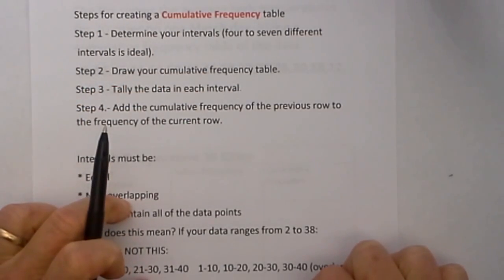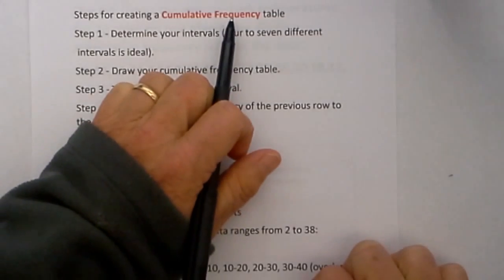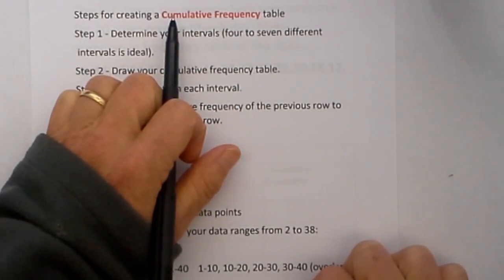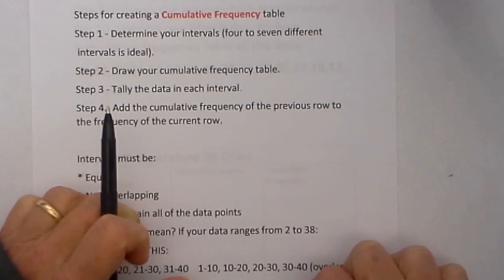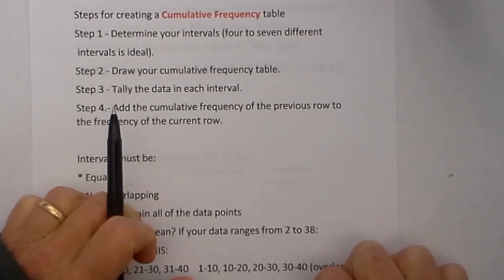A cumulative frequency table is a little different than a frequency table in that it keeps a running total. A frequency table just organizes data into categories to show how frequently an event occurs.